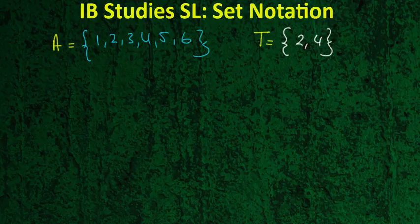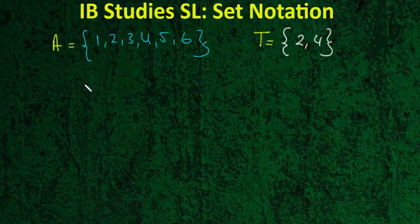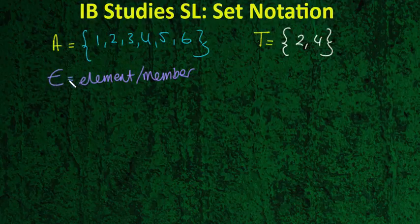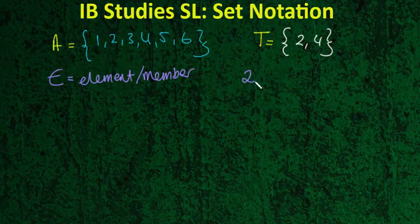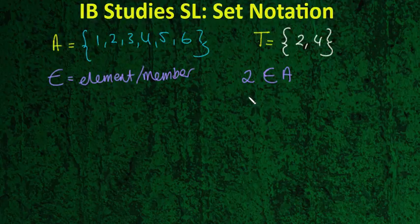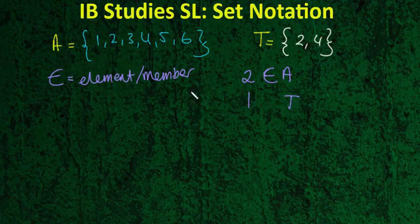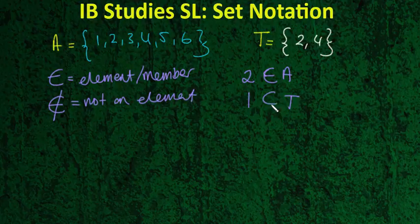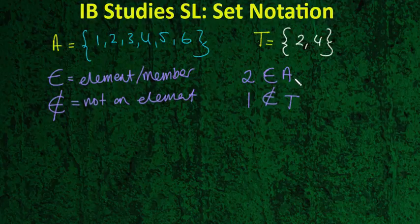Now if I want to talk about an individual number within that set, what we might do is talk about an element or a member of that set. And often we use the symbol, it looks like an E. I guess it works out well for element, doesn't it? And so for example, I could say that two is an element of A. Now what happens if I want to talk about something that was not an element? So for example, if I want to talk about 1 and talking about set T, for example, what we might do, instead of saying it is an element, just like an equal sign, we can use not equal to. So it's not an element. So not an element or not a member. So I'm going to use a little E. I'm going to put a line through it. So 2 is an element of A, but 1 is not an element of T.